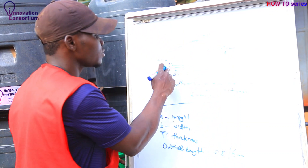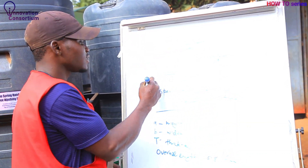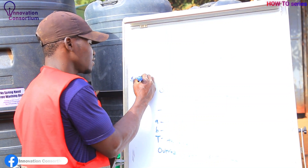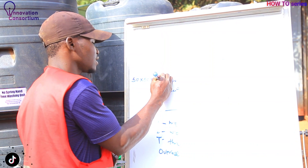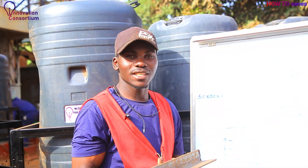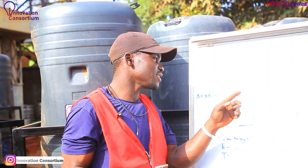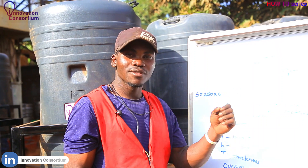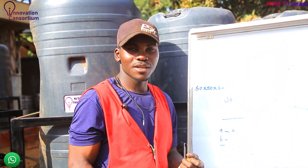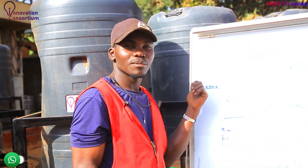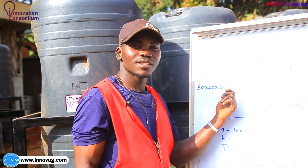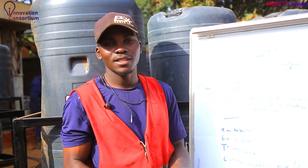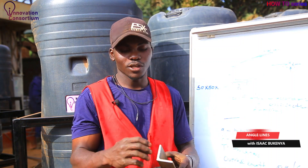These measurements we've been talking about are in millimeters. So this is a 50 by 50 by 6 millimeter angle line. Remember all measurements are in millimeters. That's how we specify an angle line depending on its size or cross-sectional size.